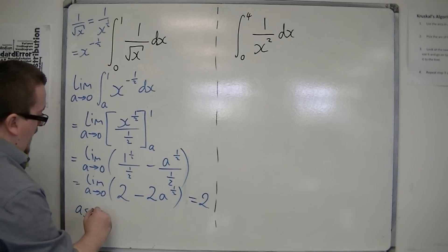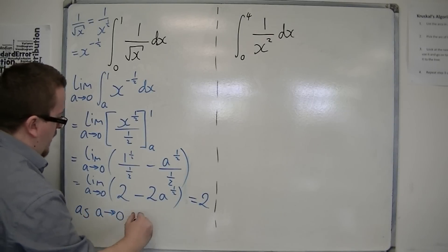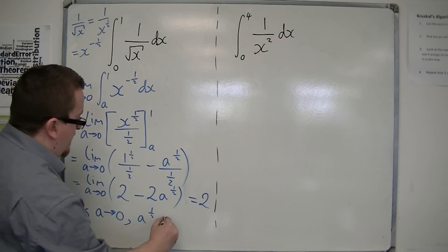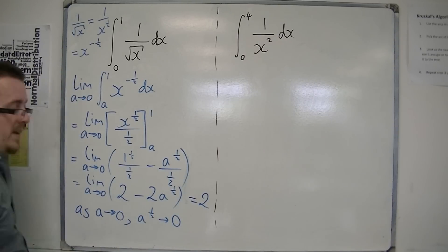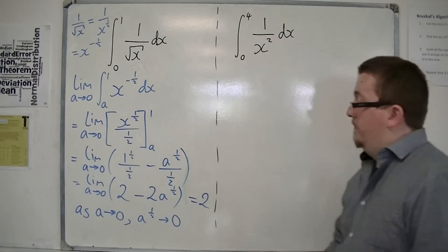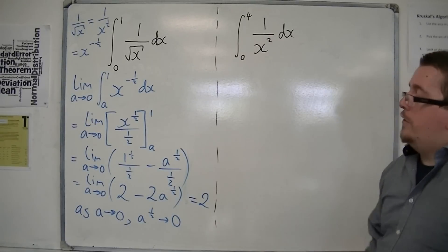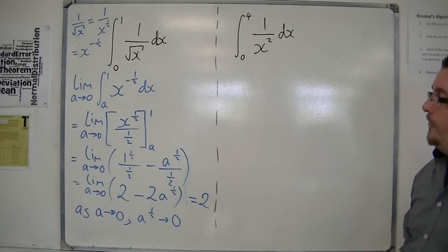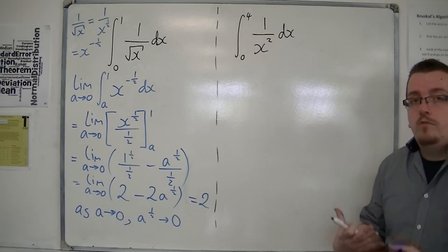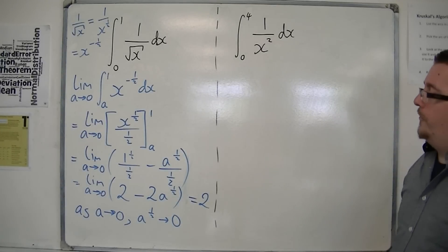So as a tends to 0, a to the half tends to 0. These explanation parts of what's going on are very useful for the examiner to see. It allows them to see your comprehension of what's happening here.